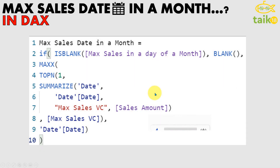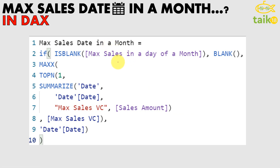First of all, you need to go and see my previous video, where I calculated how to get the maximum sales in a day of a month, because then you can easily understand how this actually works. If you've already seen that video, you may wonder why this has a bigger calculation. That's because we need to get the maximum date, so it's a different calculation — but don't worry, it's straightforward and I'll tell you step by step.